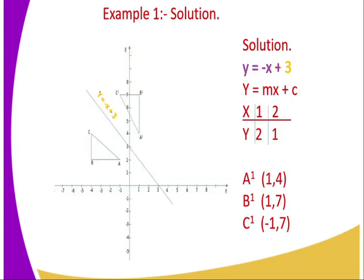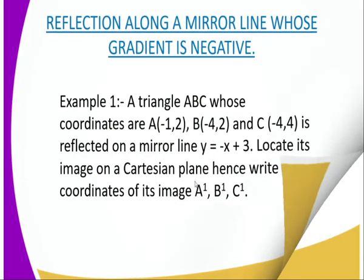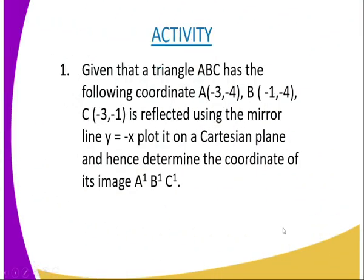After plotting all the image coordinates, you join them together to get the image triangle. The coordinates of the image are: A' = (1, 4), B' = (1, 7), and C' = (−1, 7). That marks the end of today's lesson.